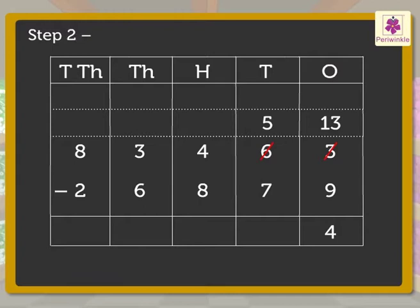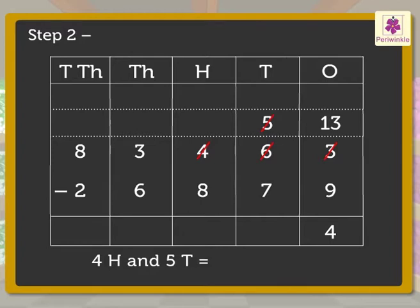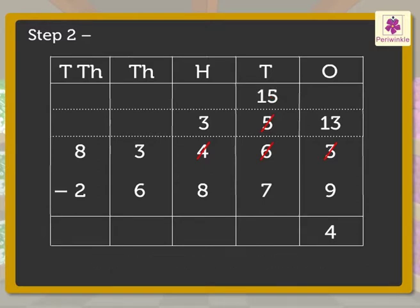Step 2: Subtract the digits in the tens column. Here, as the tens are not enough, we regroup the hundreds. That is, 4 hundreds and 5 tens is equal to 3 hundreds and 15 tens. Therefore, 15 minus 7 is equal to 8 tens.